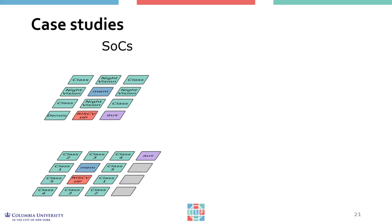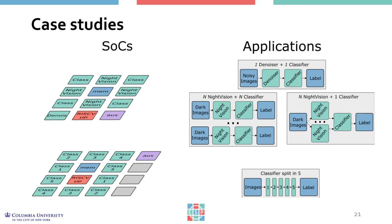On the left are two SOCs implemented on FPGA with the ESP4ML flow. The first SOC contains multiple instances of the three accelerators: the classifier, the denoiser, and the night vision accelerator. On the right, you can see the data flows of applications developed with the ESP4ML accelerator API, where each green block gets executed on an accelerator. These applications have different levels of pipelining and parallelization of the accelerators. For the second SOC, we partitioned the classifier into five accelerators to experiment with a longer pipeline, so the application on the right invokes a chain of five accelerators.